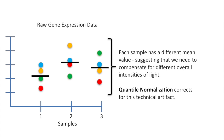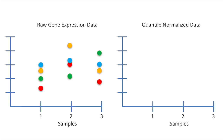Quantile normalization corrects for this technical artifact. So let's do it. So that we can keep track of how this method works, we'll keep the raw data on the left side and the quantile normalized data on the right side.